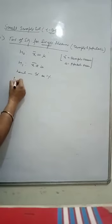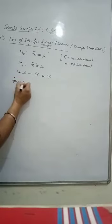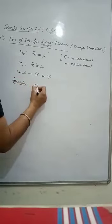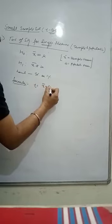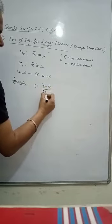Now, the formula, the test statistic used here is, this is t equal to x bar minus mu by s by root n.